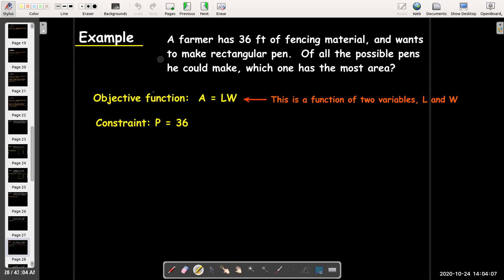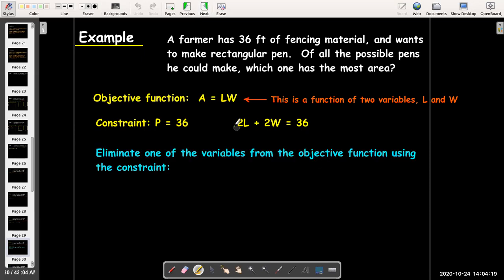So, twice the length plus twice the width has to be 36. And so, what we can do is use this second equation to eliminate one of the variables from our objective function. And so, the way we do that is we go ahead and solve for one of the variables. Here, I've solved for L. You could also solve for W.